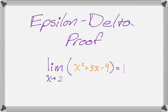In this video we're going to do an epsilon-delta proof that the limit as x approaches 2 of the quantity x squared plus 3x minus 9 is equal to 1. So that's going to be a quadratic.